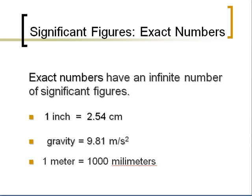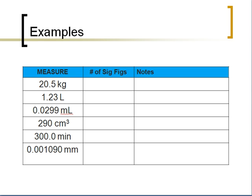The last category is exact numbers. Exact numbers have an infinite number of significant figures because they are not measured values. So whatever exact number you see, we do not consider significant figures for it — we have an infinite number. Examples include: one inch equals 2.54 centimeters, gravity equals 9.81 meters per second squared, and one meter always equals a thousand millimeters. This makes more sense when we start doing math operations, so don't worry too much about exact numbers just yet.